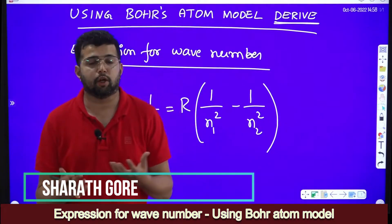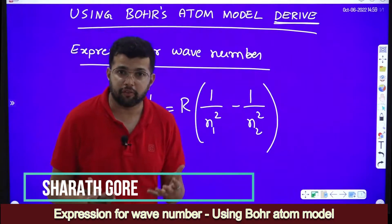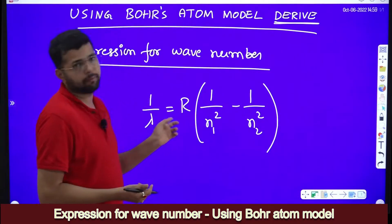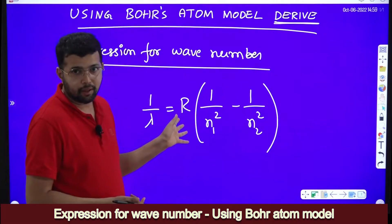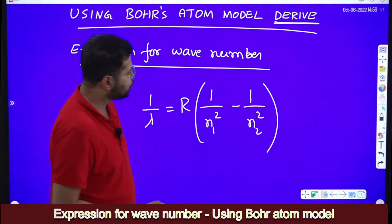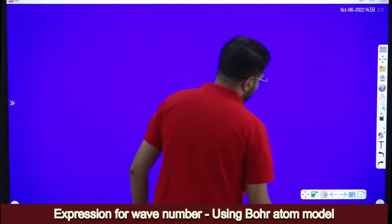Hello dear students, in this session we will learn how to derive an expression for wave number using Bohr's atom model. We have to derive this equation: 1 by lambda is equal to R, r stands for Rydberg's constant into 1 by n1 square minus 1 by n2 square. We will see how to derive it.